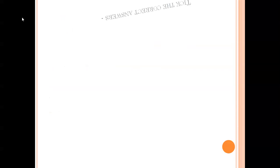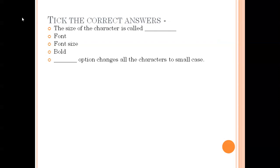Next is take the correct answers. First question: The size of the character is called - font size or bold? Second: Dash option changes all the characters to small case - upper case, toggle case, or lower case? Third: The shortcut for italic is?